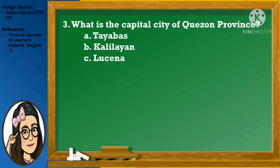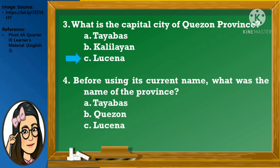Number 3: What is the capital city of Quezon Province? A. Tayabas, B. Calilayan, or C. Lucena. Very good! The correct answer is Lucena. Number 4: Before using its current name, what was the name of the province? A. Tayabas, B. Quezon, or C. Lucena. Good job! The correct answer is Tayabas.